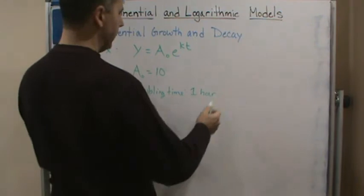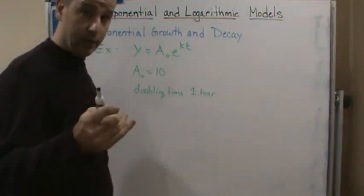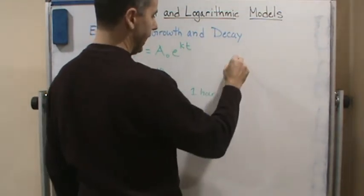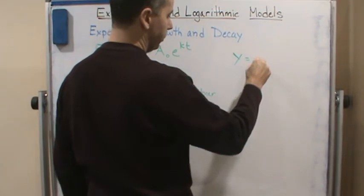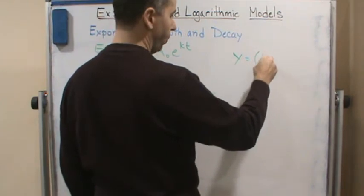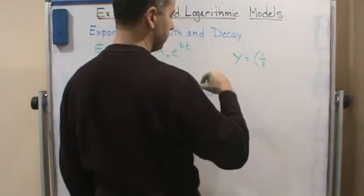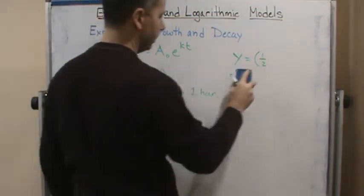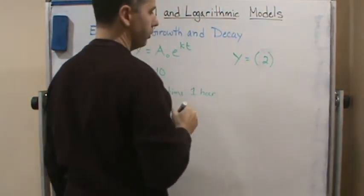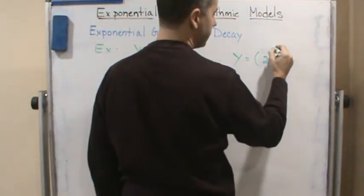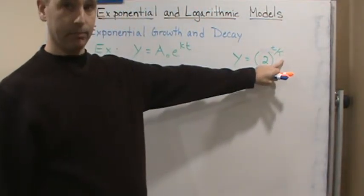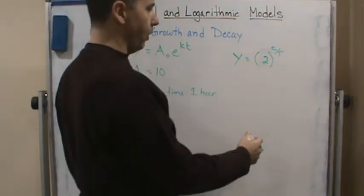How would I approach this? Well, here's the thing: I could use the formula that we saw before, which was y equals, in this case, two to the t over capital T, where T represents the doubling time, which in this case would be one.